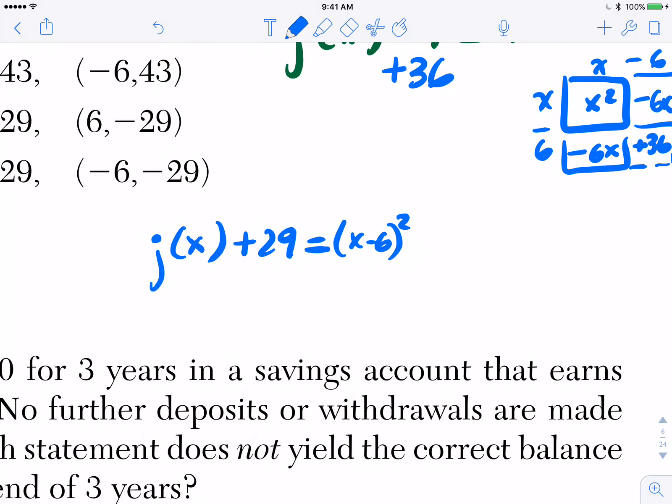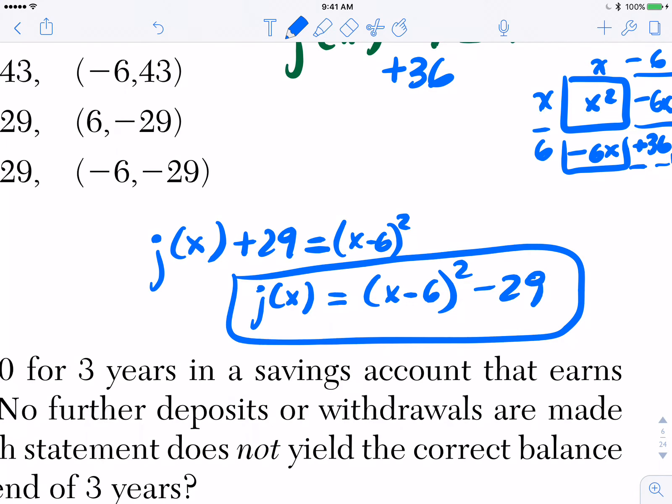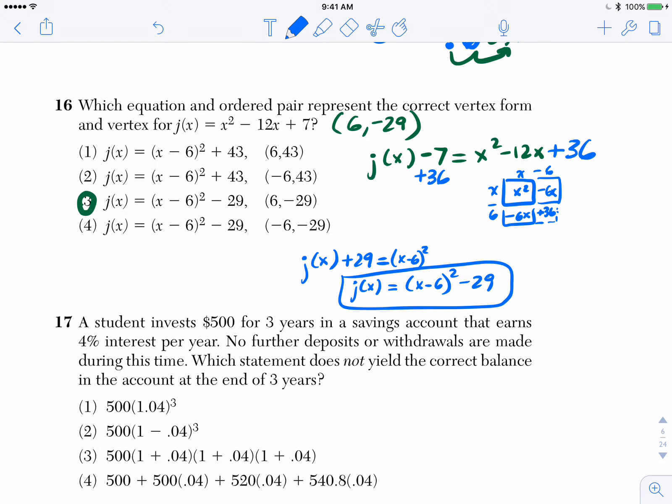Now the last thing you would have to do is move that 29 over by subtracting it, you arrive at the correct vertex form of that, which we also notice was the left-hand side of our correct answer that we found earlier.